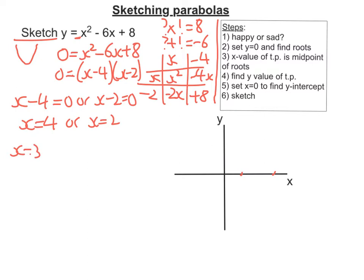And to find the y value of the turning point, we put x equals 3 into my original equation. So it's going to be y is equal to 3 squared minus 6 times 3 plus 8. Put that into my calculator, and I get minus 1. So my turning point is going to be 3, negative 1. And again, I can put that onto my graph.